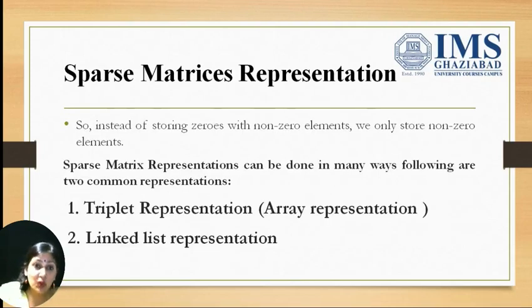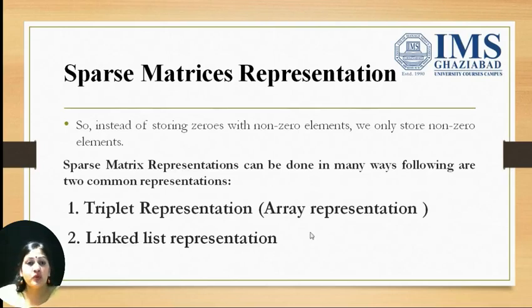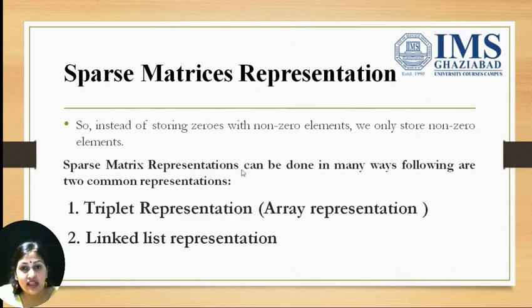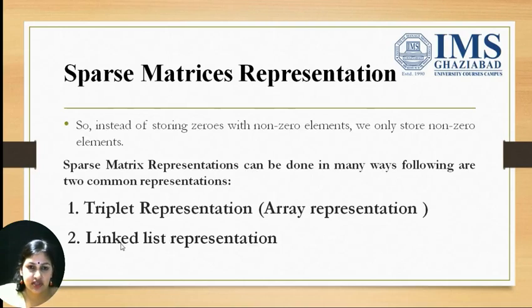So instead of storing zeros along with non-zero elements — that is, instead of storing sparse matrices in the form of normal two-dimensional arrays — we only store the non-zero elements. To represent or store sparse matrices, we use the following two common representations: one is triplet representation, also known as array representation, and the second one is linked list representation.